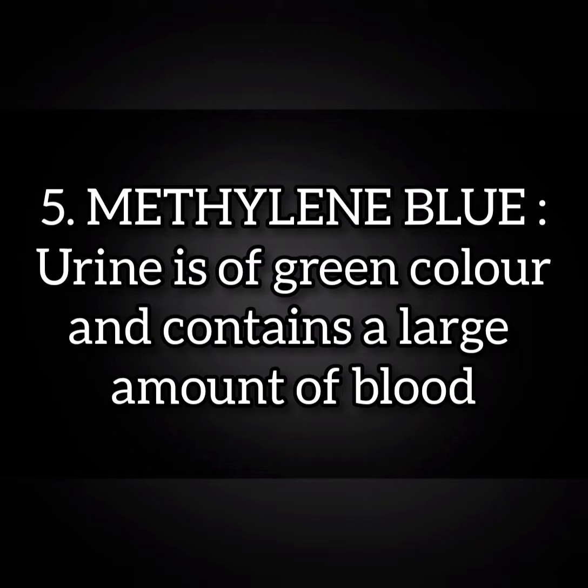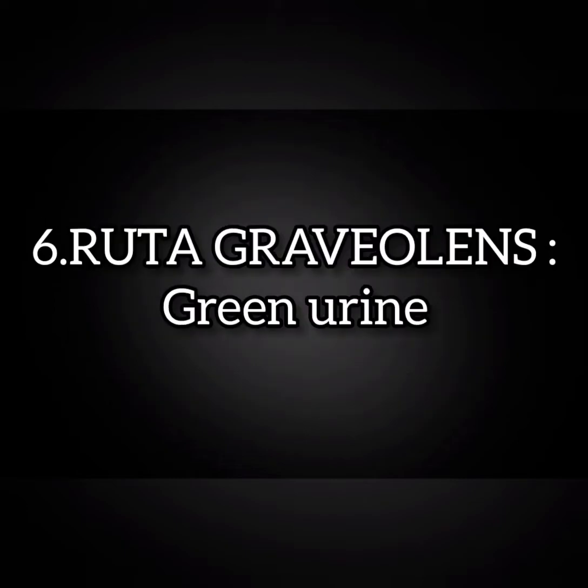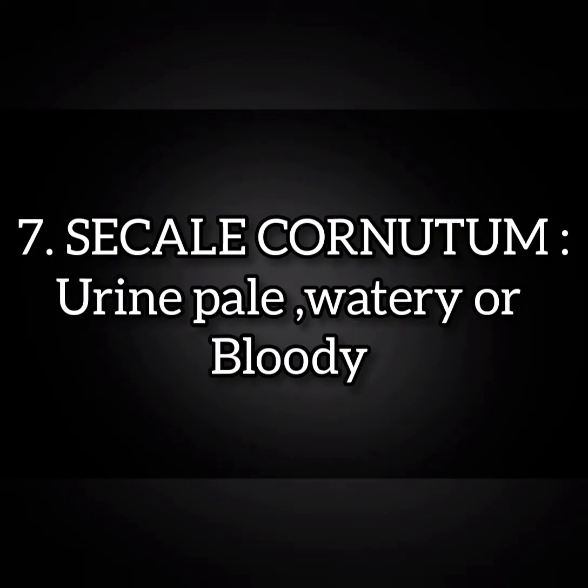Methylene blue: urine is of green color and contains a large amount of blood. Ruta Graveolens: they also have green urine. Cicuta Cornutum: urine is pale, watery, or bloody in nature.